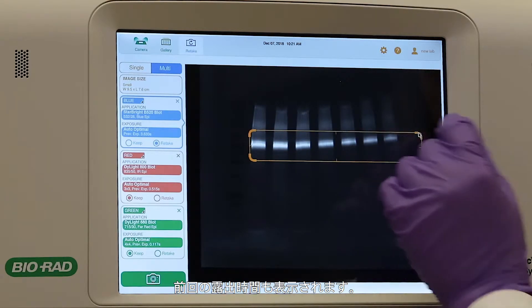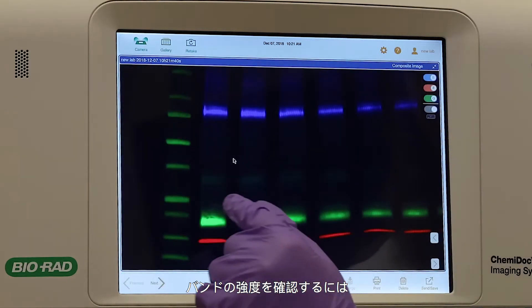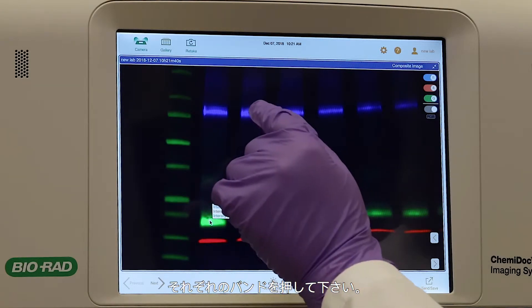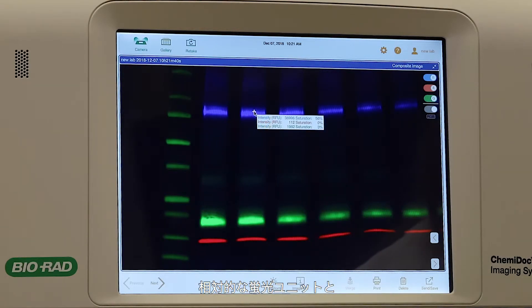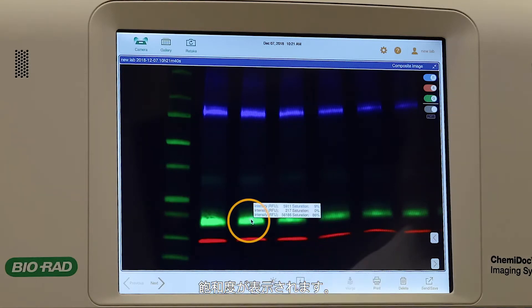For a quick assessment of the band intensities, you can tap each band. The relative fluorescence units and percent of saturation will appear.